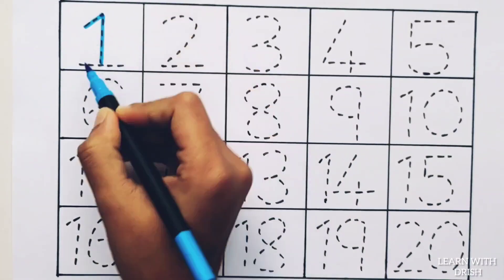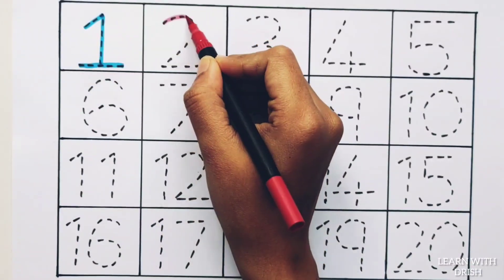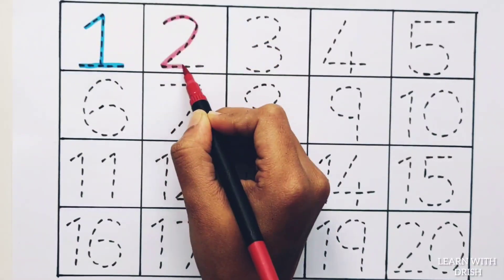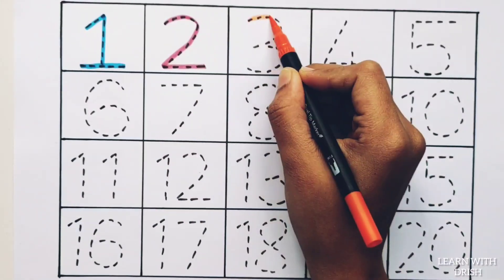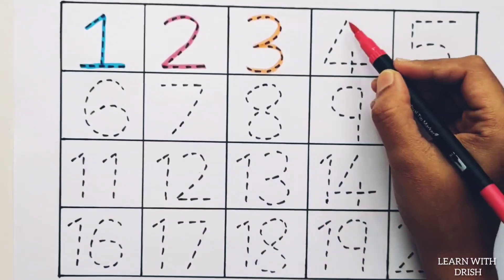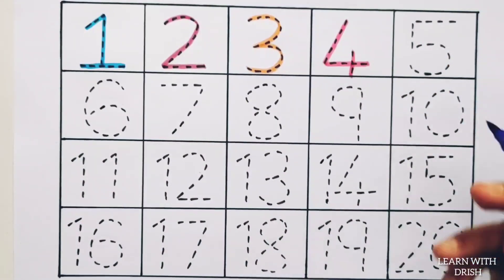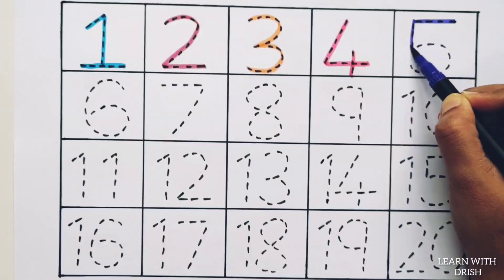1. O-N-E-1. 2. T-W-O-2. 3. T-H-R-E-E-3. 4. F-O-U-R-4. 5. F-I-V-E-5.